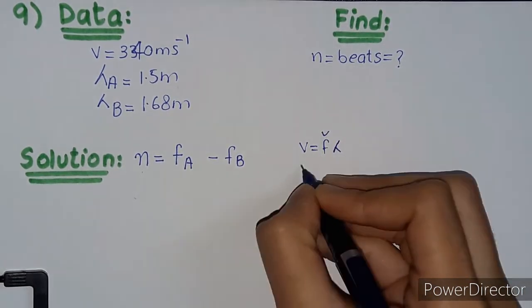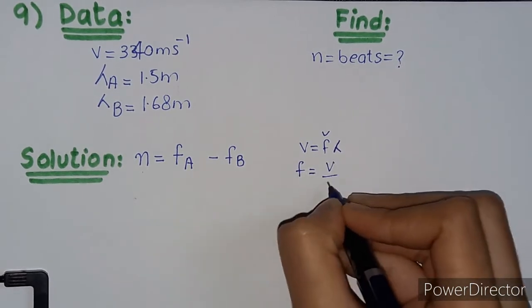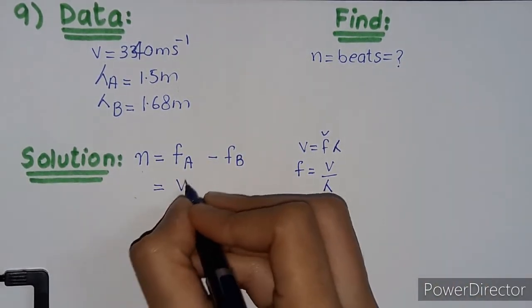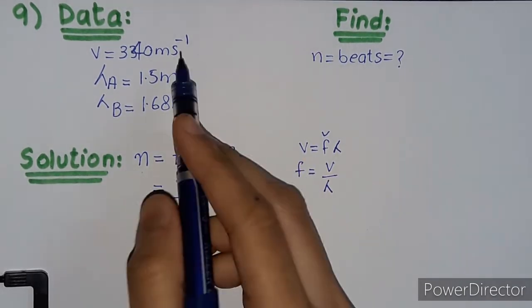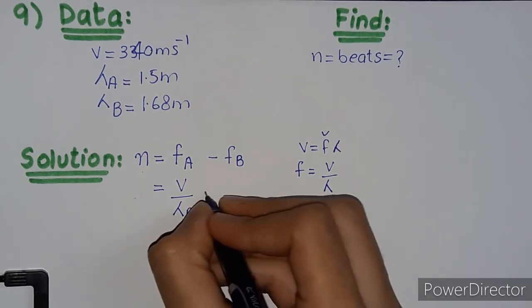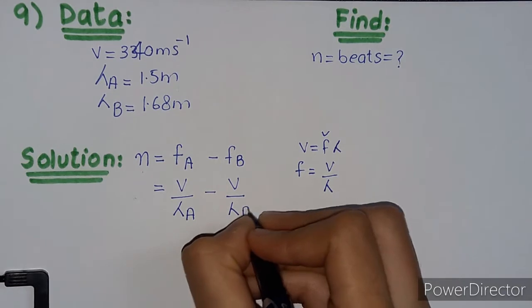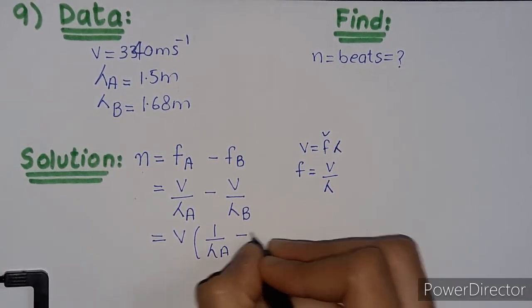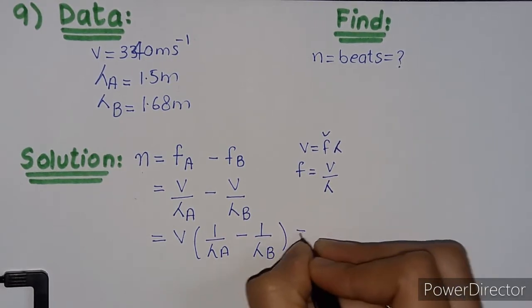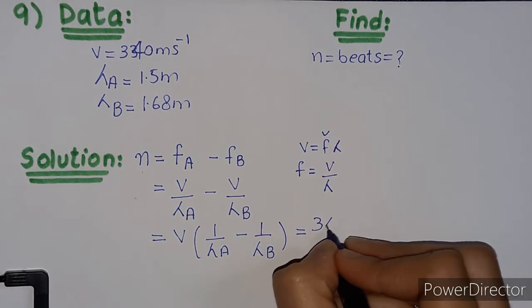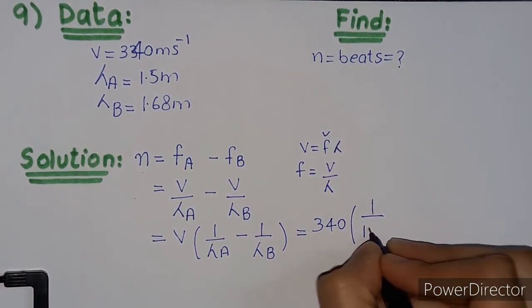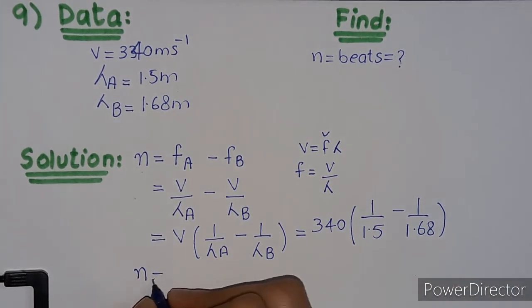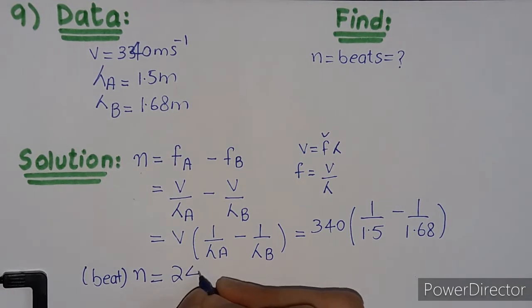Using frequency equals v divided by lambda, we substitute: n equals v times (1 divided by lambda_A minus 1 divided by lambda_B). Taking v common: 340 times (1 divided by 1.5 minus 1 divided by 1.68). Solving gives the number of beats equal to 24.2, approximately 24 beats per second.